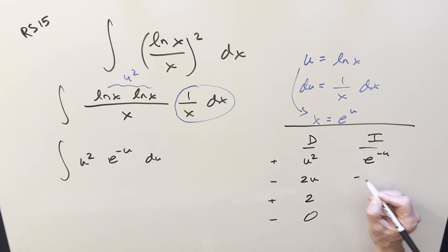Integrate this three times. We get minus e to the minus u. Do it again. Another minus pops up. Minus times minus is plus, so we get e to the minus u. And then this one's going to be the same as this.